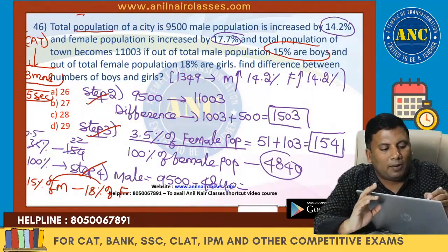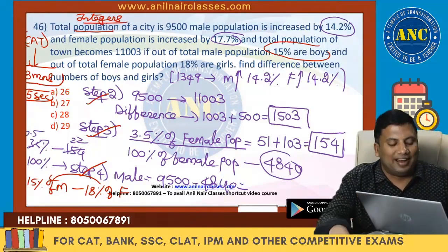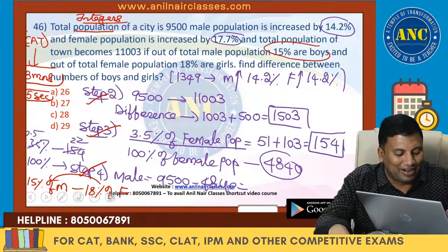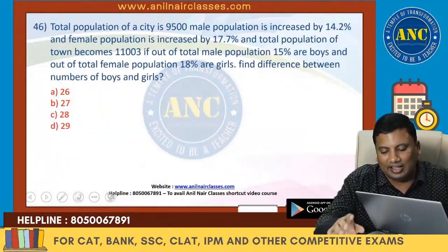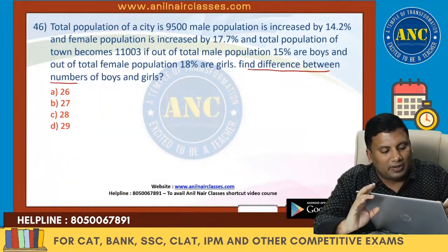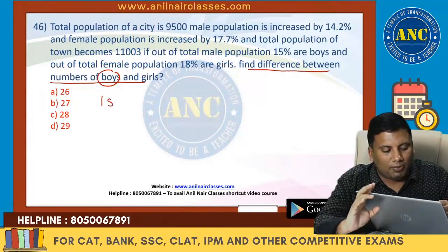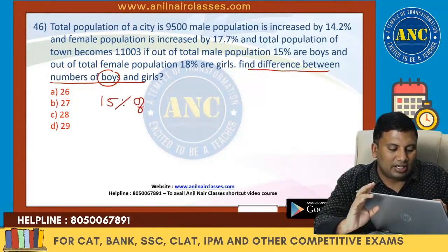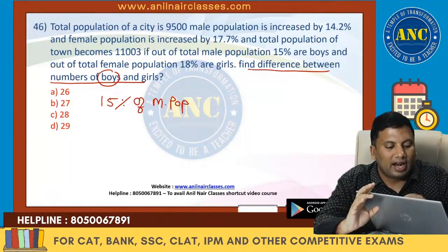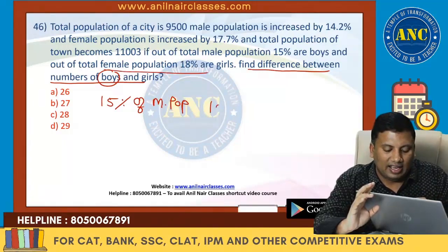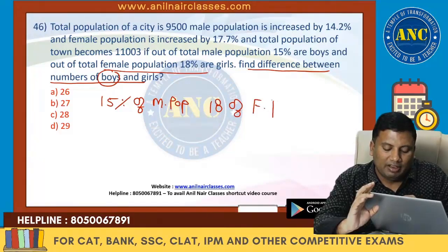Read the question: find the difference between the number of boys and the number of girls. Boys are 15% of male population, and girls are 18% of female population. Subtract and you will get the idea. Now see — 18% is divisible by 3, and 15% is divisible by 3, so the answer should be divisible by 3. Only one answer option is divisible by 3, so you can eliminate the others immediately.